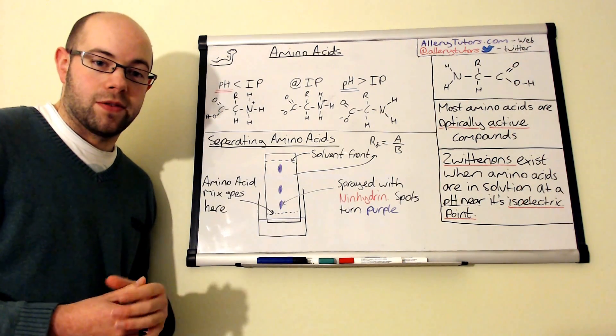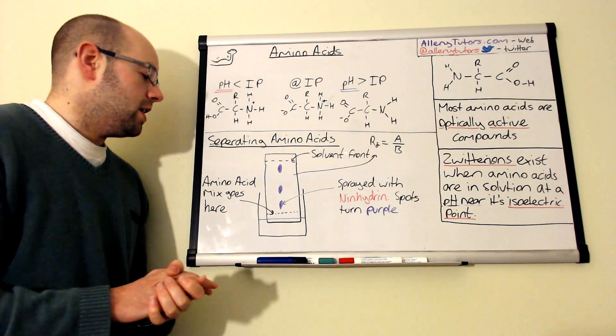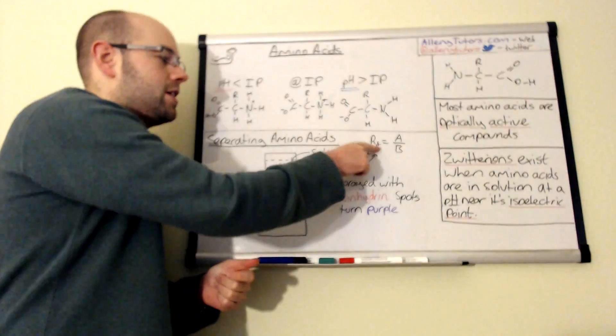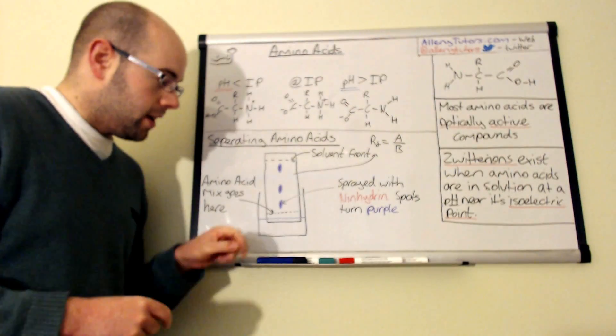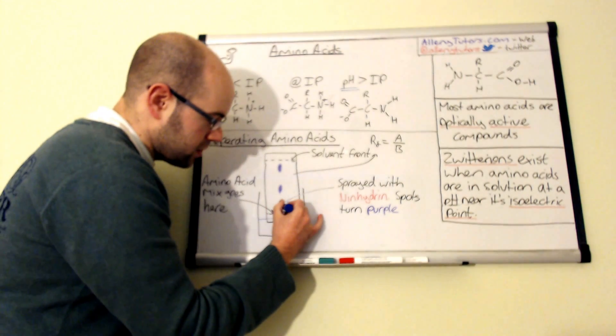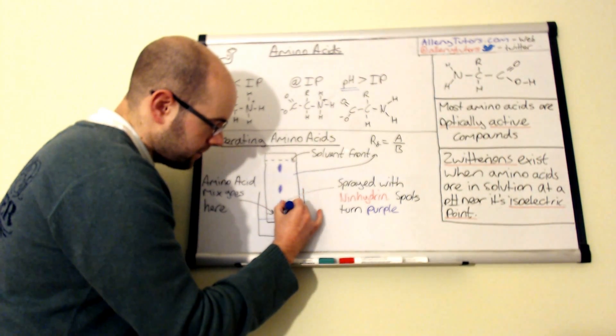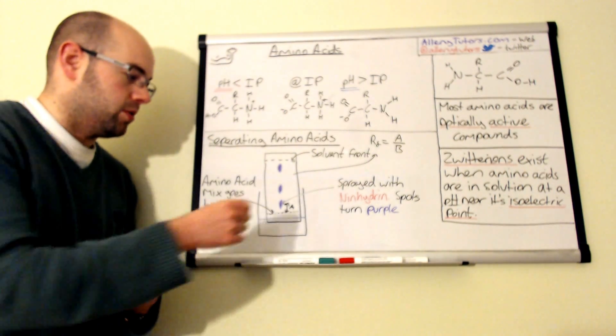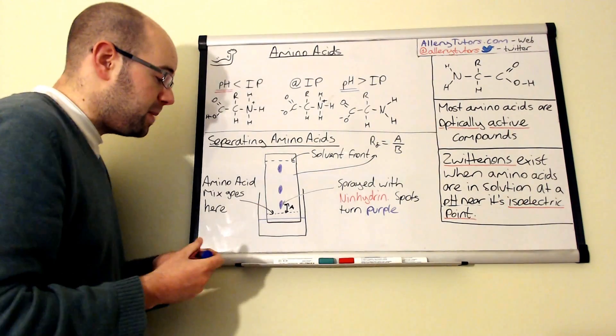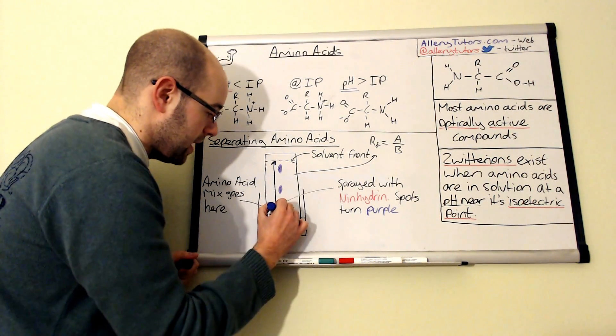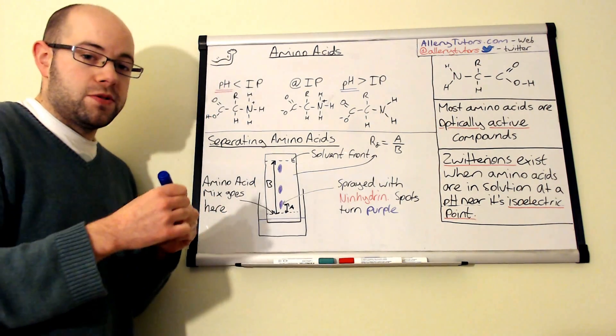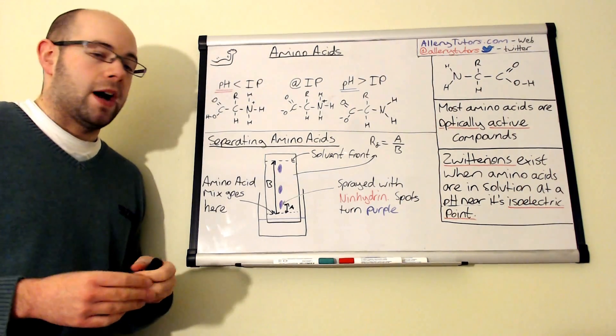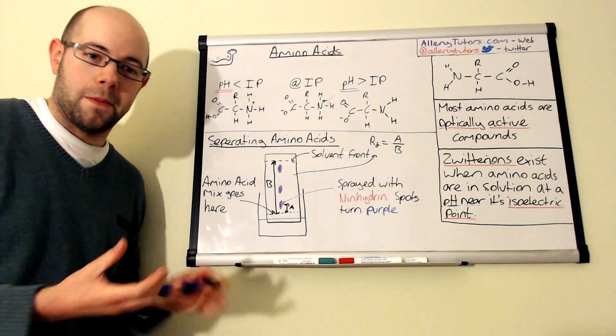And just the final point as well is we can actually identify amino acids by doing something called an RF point or an RF calculation. An RF is effectively the distance the spot has traveled. So the distance the spot has traveled from the original pencil line where you put your concentrated mix, divided by B, and B is the distance that the solvent has traveled up the paper. So if you divide those two numbers, you'll get an RF point and that RF point can be used to help identify the amino acid that's in your solution. So you can compare it against a known amount.